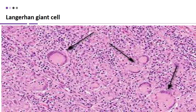This is the histological picture of Langerhans cells, also known as giant cells. These are formed by the fusion of epithelioid cells, which are basically macrophages. They contain nuclei which are arranged in a horseshoe-shaped pattern in the cell periphery.